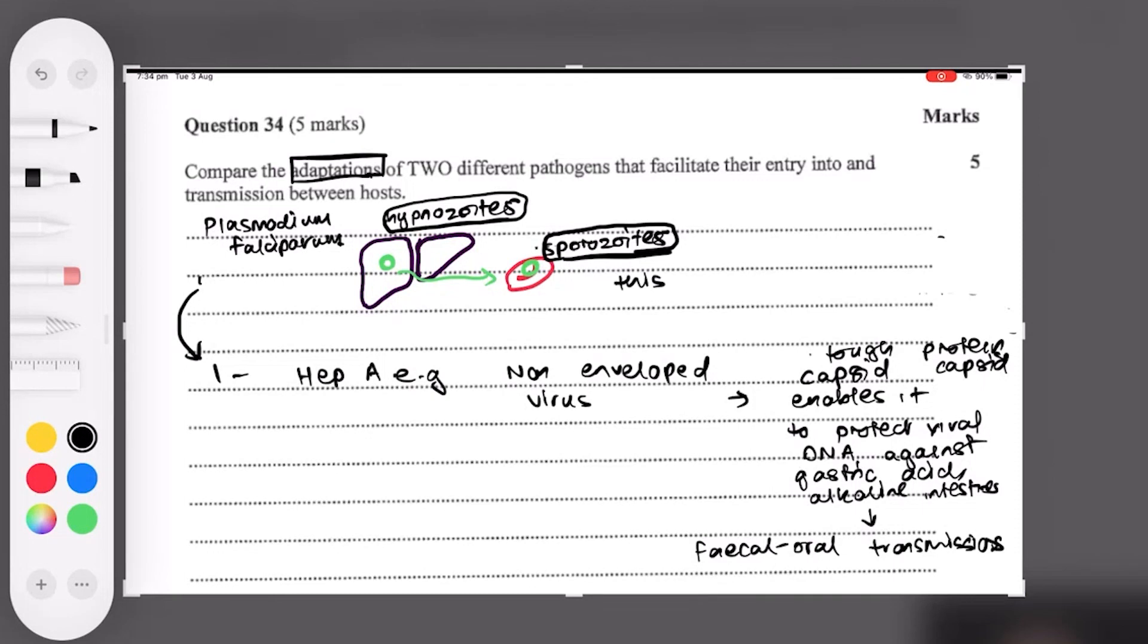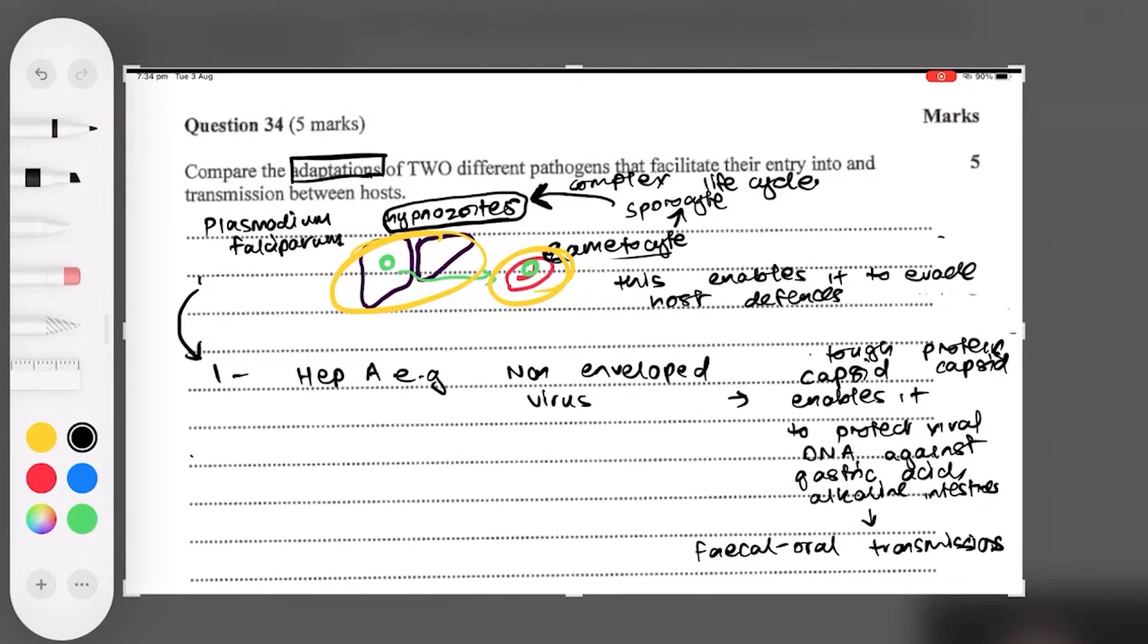And this enables it... complex life cycle. Yeah so it's multiple stages, so technically the stage is here this would actually be called gametocyte then it will become a sporocyte, but you don't need to know that level of detail at all. As long as you mention one of these buzzwords, it has a complex life cycle in which it travels between the liver and red blood cells. I think that will be enough to give you full marks. Maybe just mention liver and red blood cells, don't worry about the buzzwords there. And this enables it to evade host defenses. Good.